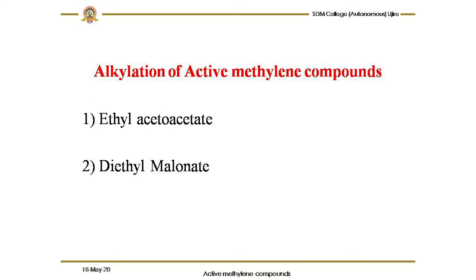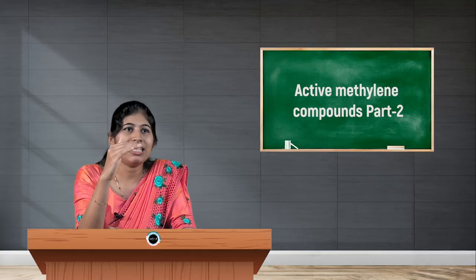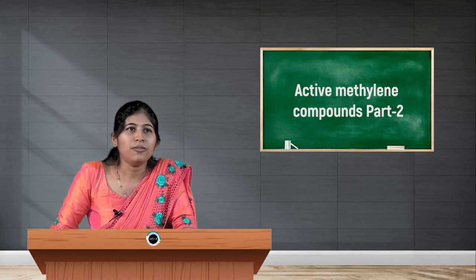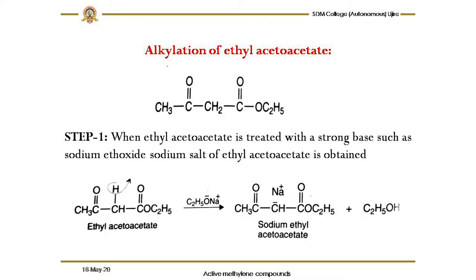I am going to give two examples: ethyl acetoacetate and diethyl malonate. Let us see them one by one. First, alkylation of ethyl acetoacetate. In step one, when ethyl acetoacetate is treated with a strong base — sodium ethoxide — the sodium salt of ethyl acetoacetate is obtained.